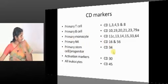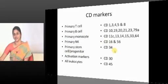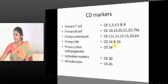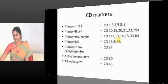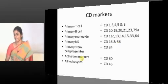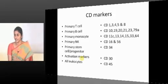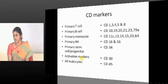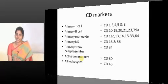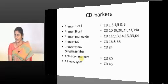The primary stem cell marker is CD34. Endothelial cells also express CD34, along with CD31 and von Willebrand factor. These markers — CD34, CD31 — are all associated with endothelial cells.